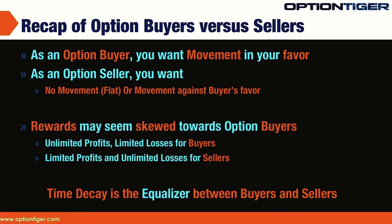Time decay becomes more exponential as we approach expiry. Time decay is also the great equalizer for the seller. In the previous courses on calls and puts, we felt that the risk-reward picture was skewed to the buyer's advantage — well, time decay is the equalizer in favor of the seller.